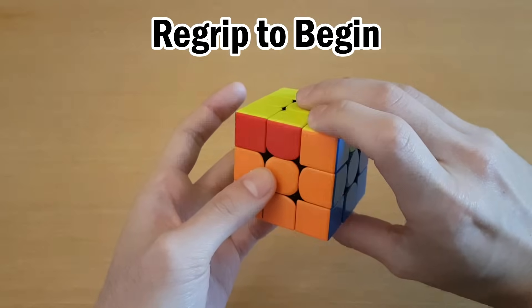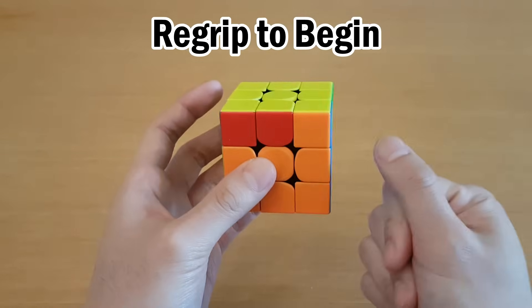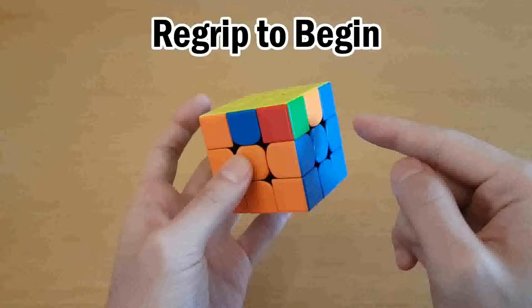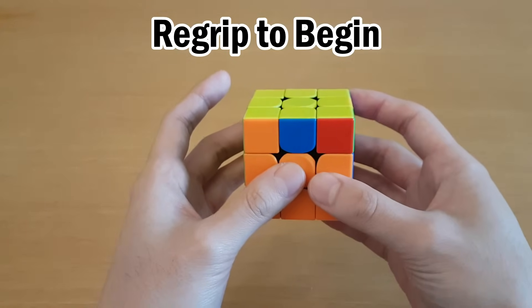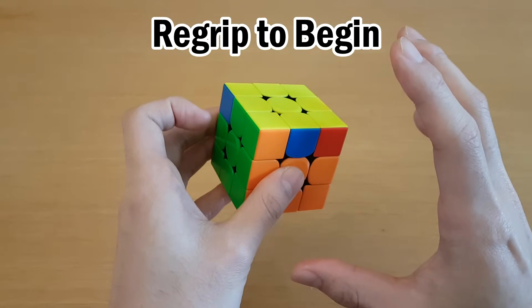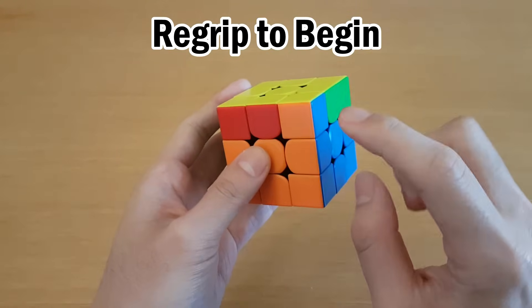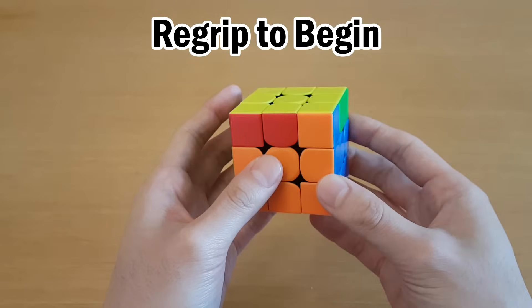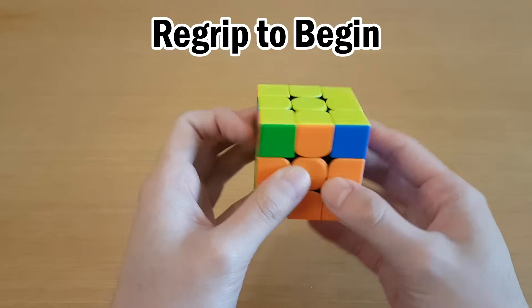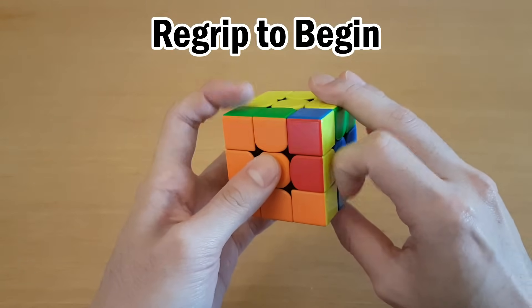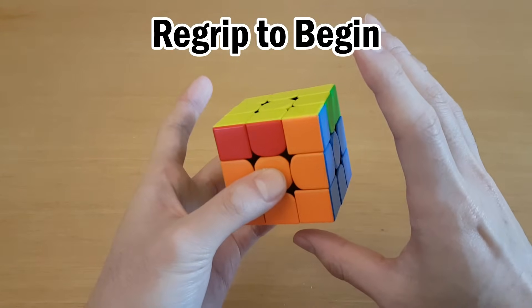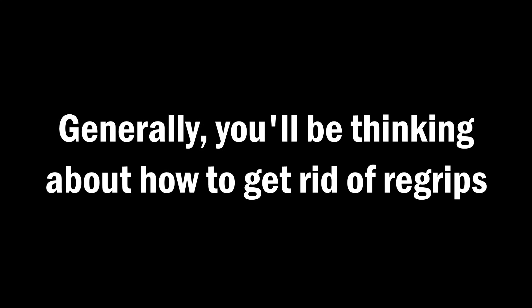Because re-grips are a big deal and you'd usually start PLL with your thumbs on front, having a re-grip to begin an algorithm looks like a bad idea. Now if you have the way you do PLL very optimized and you tend to be able to recognize from a lot of different angles, then this is less of a problem than you might think. You can always just align the top with your left hand. But generally for a lot of your algorithms, you'll be thinking about how to get rid of re-grips and this comes down to finger tricks.